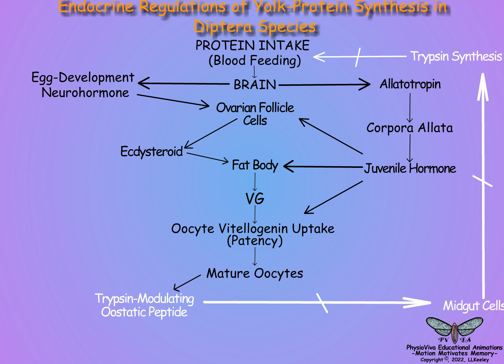Based on the two models, it is evident that the two major metamorphic hormones also play key roles in adult reproduction. Juvenile hormone in particular is apparently the main hormone, with the addition of ecdysteroids providing additional variables based on the diverse life histories of individual orders and species.